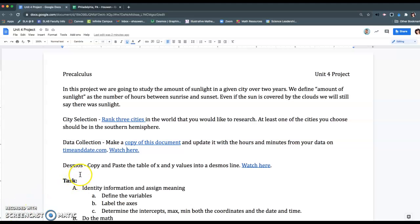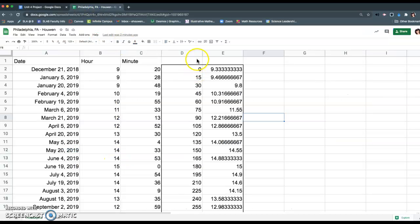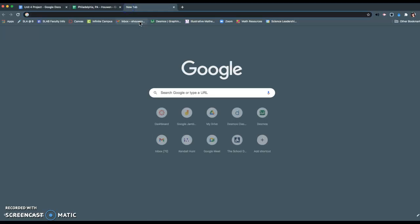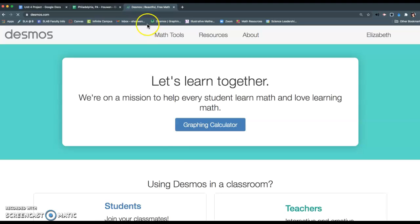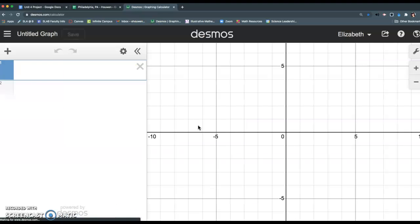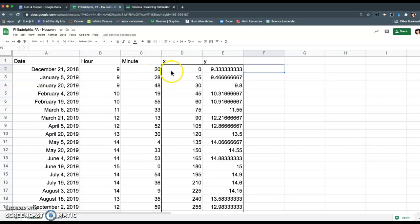Okay, so now we need to put all of this onto Desmos. That's the next step. You have your spreadsheet here labeled X and Y, so this is your table of values. What you're going to do is go to Desmos and open the graphing calculator.